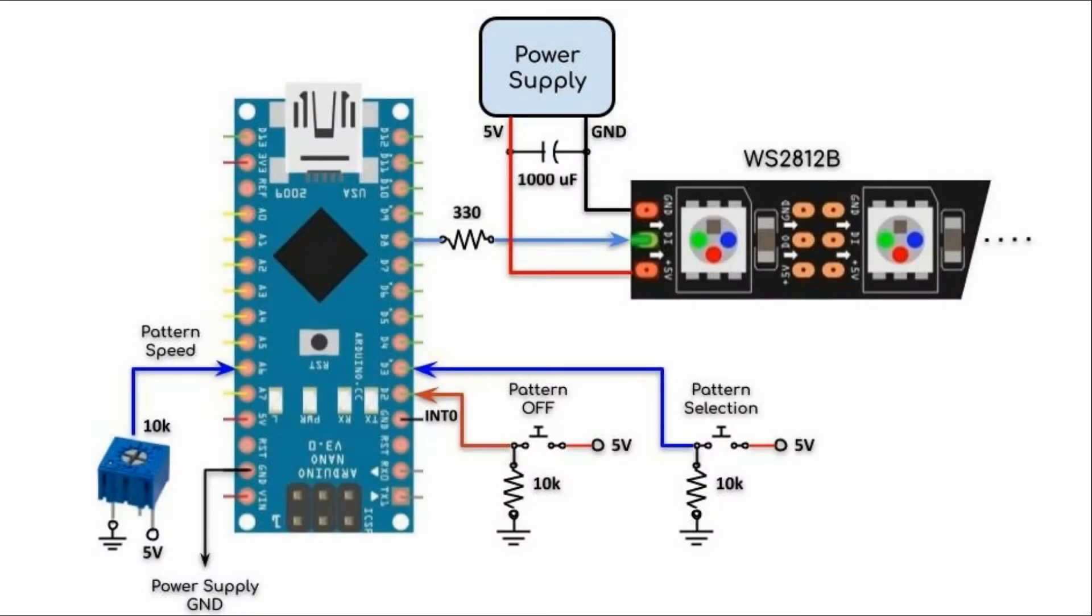A diagram of the implemented system is shown here. We have the data pin of the module connected to digital pin D8 of the Arduino, and the module is powered by a 5 volt power supply.